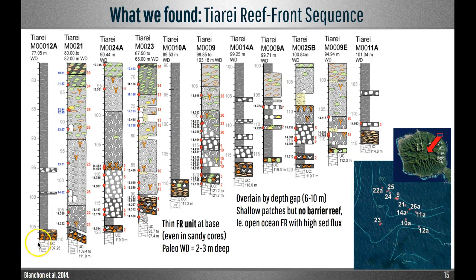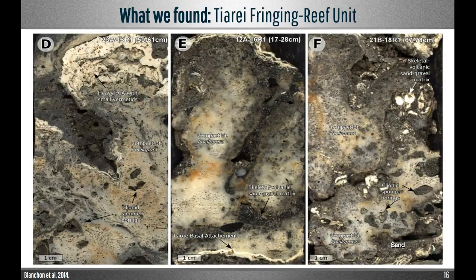We found the same thing at Thierry. There was a fringing reef unit at the base of every core, with paleo water depths confirming growth in 2–3 metres of water. The dates directly above the unit show a similar depth gap of between 5–10 metres, suggesting there was a no-growth zone and thus no barrier reef. The fringing reef at Thierry was also an open ocean type, exposed to large waves and high sediment flux, corroborated by stubby-branching Pocilloporids with large attachment surfaces and voids filled with coarse sediment, and no acroporid corals.